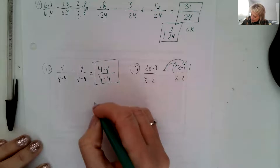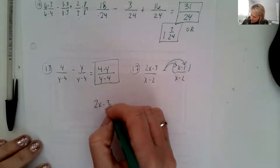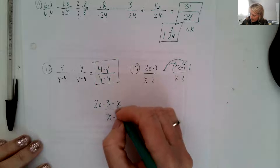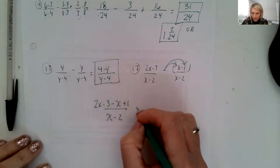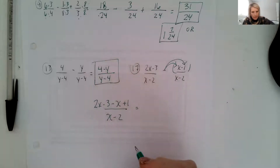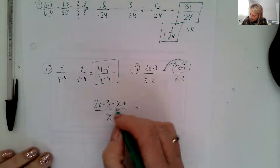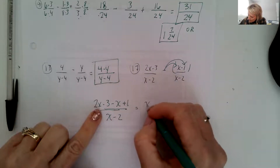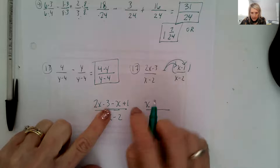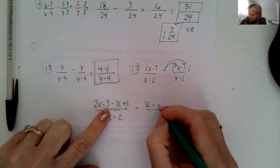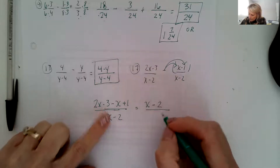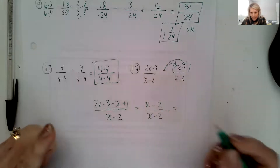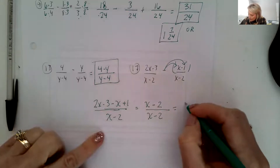The key here is we have to distribute this negative to that entire binomial. So this is really going to be two x minus three, and when we distribute it becomes minus x plus one. Then we can combine: two x minus x is x, minus three plus one is minus two — all over x minus two. And that actually simplifies to one.